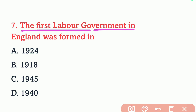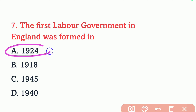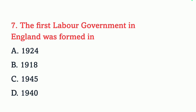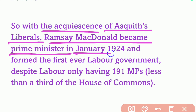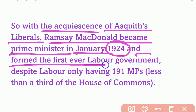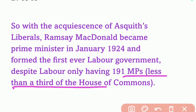Question number 7. The first Labour government in England was formed in 1924, 1918, 1945, or 1940? The correct answer is 1924. Option A is the right answer. Ramsay MacDonald became Prime Minister in January 1924 and formed the first-ever Labour government, despite Labour only having 191 MPs, less than a third of the House of Commons.